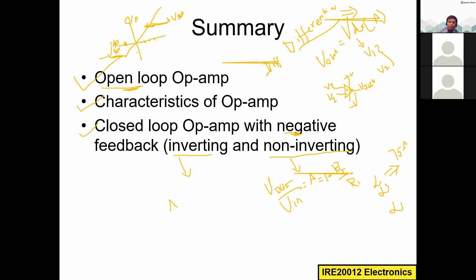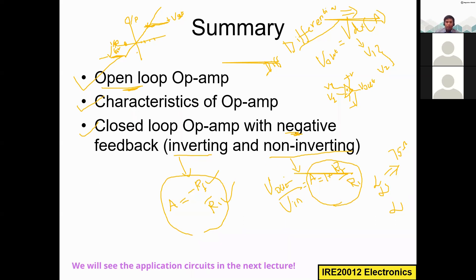For the non-inverting op-amp, the gain formula is A equals 1 plus R_F divided by R_1. For the inverting op-amp, the gain formula is A equals minus R_F divided by R_1, where R_1 is the input resistor and R_F is the feedback resistor. By changing these values you control the output voltage. That covers the basic open-loop and closed-loop configurations; next we will look at applications of operational amplifiers.